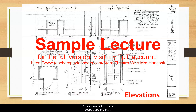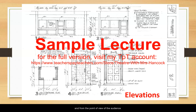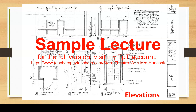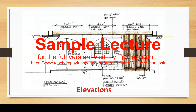You may have noticed that the different pieces of scenery were labeled letters A, B, C, etc. Each piece would have to be drafted as an elevation, showing the scenic unit standing up from the point of view of the audience. These elevations show the dimensions of the scenery, as well as details such as what it is constructed out of. Here we see an interesting piece of scenery that revolves with a jail door on one side and a wardrobe door on the other. This elevation is for a wall and door unit, showing the various sizes of the scenery and suggestions for construction techniques.